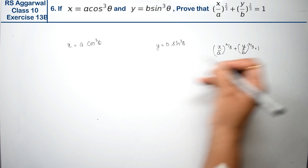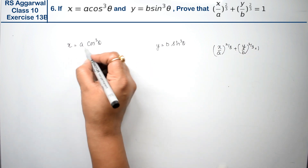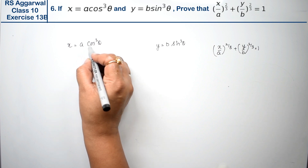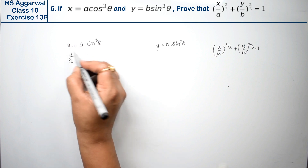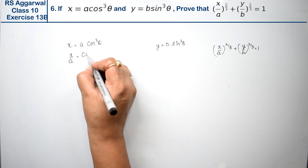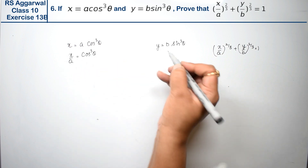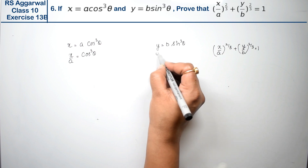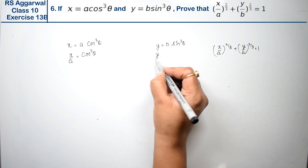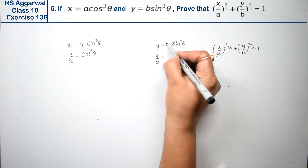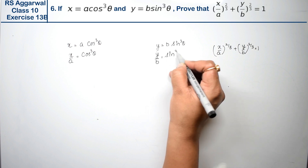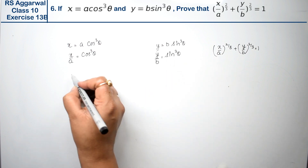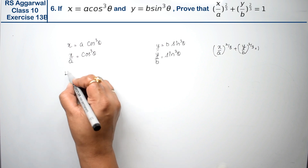To find x/a, we bring 'a' to the other side by dividing, so x/a = cos³θ. Similarly, for y/b, we bring 'b' to the other side, giving us y/b = sin³θ. Now we take the left-hand side of the equation.